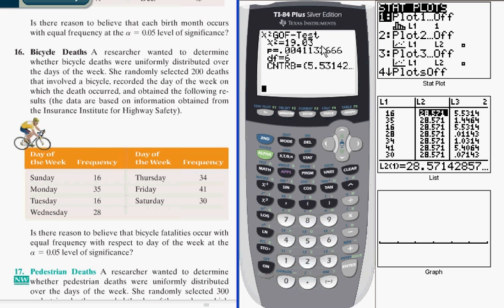And it returns the same values we just got doing it by hand, your test statistic and your p-value. Okay, so that's how you can do it if you have an 84.